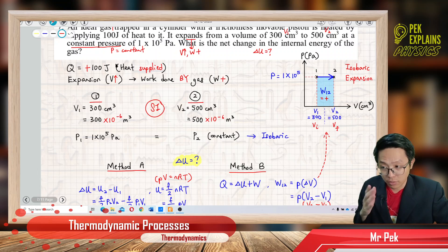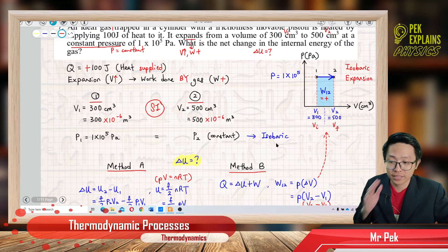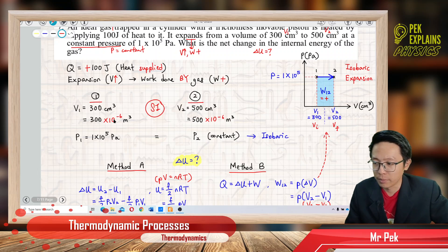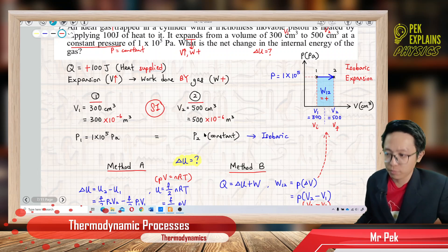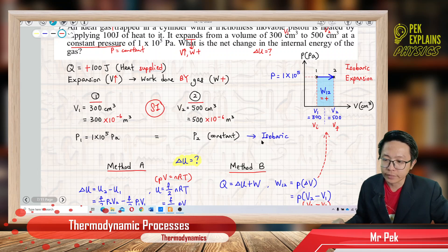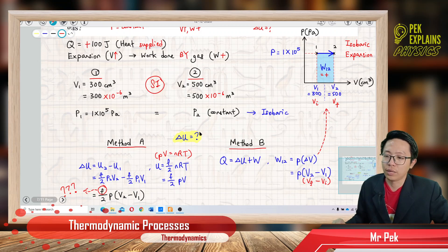Now, pressure is constant — this is the isobaric process because of constant pressure. That means P1 equals P2, which is 1×10⁵ Pascal. What is the net change in internal energy — what is delta U? How do we find delta U? Actually, we have two methods, but one of them cannot be used due to lack of information.